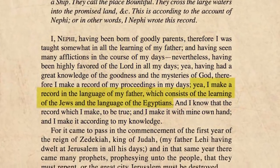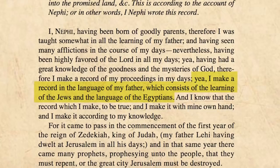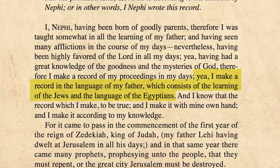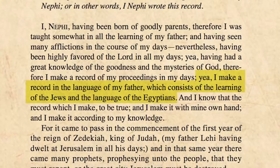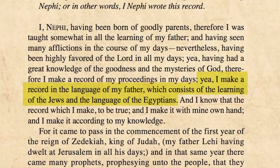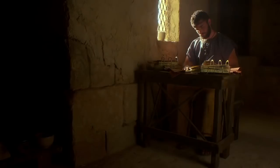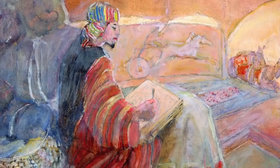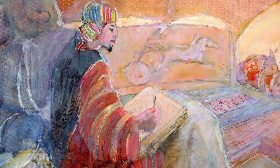Nephi said he wrote his record in the language of his father, which consists of the learning of the Jews and the language of the Egyptians. This being the case, it is reasonable to expect that his writings should bear the marks of an ancient Judeo-Egyptian literary culture. Nephi's use of colophons fulfills this expectation remarkably well.